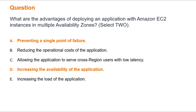Option D: Increasing the availability of the application. This is another correct answer. If you host all your instances in a single location that is affected by a failure, none of your instances would be available. By deploying across multiple availability zones, you can increase the overall availability of your application, as your instances can continue running even if one availability zone is impacted.